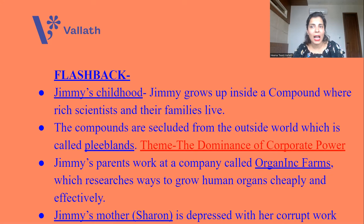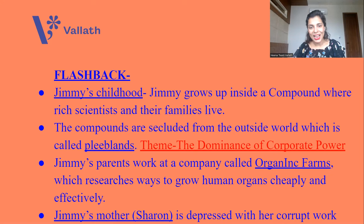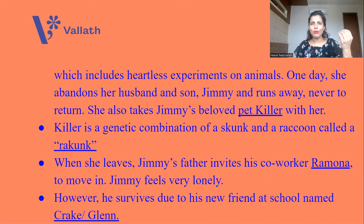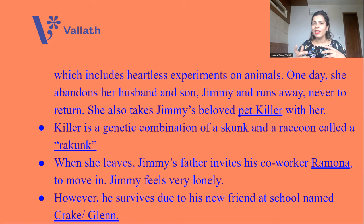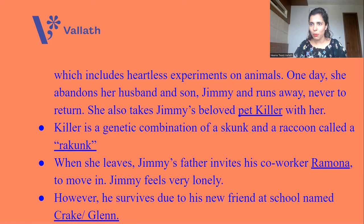Jimmy's mother Sharon is deeply depressed with this work. She calls it corruption, greed, and selfishness — including heartless experiments on animals. She is so devastated that one day she abandons her family — her husband and Jimmy — and runs away, never to return. But along with her, she takes Jimmy's beloved pet Killer. Killer is a genetic combination of a skunk and a raccoon, called a raccoon. This novel is all about genetic modification and manipulation of the human body. When Sharon leaves, Jimmy's father invites his co-worker Ramona to move in, and Jimmy feels very lonely.